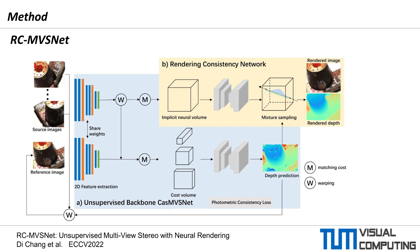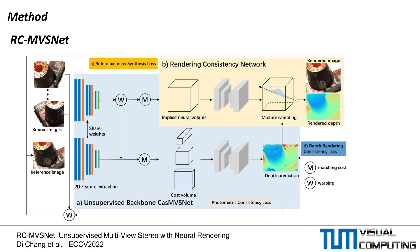A rendering consistency network queries point-wise features from the implicit neural volume along the camera ray by trilinear interpolation. The queried candidates along the ray are chosen by Gaussian uniform sampling, which uses the initial depth from the backbone network as priors. Finally, the network follows NeRF-like volume rendering to generate RGB and depth predictions. The predicted RGB and depth values are additionally supervised by the proposed reference view synthesis loss and depth rendering consistency loss, respectively.